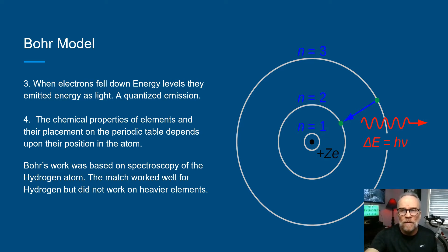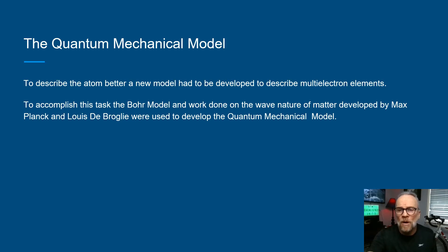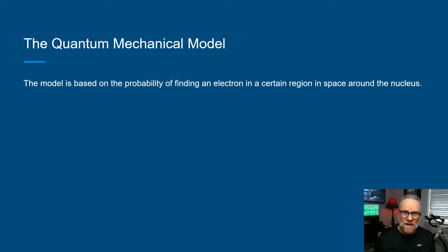The development of that better model came from other scientists. The wave nature work developed by Planck and de Broglie was used to develop this quantum mechanical model — scientists building on the work of other scientists. The model is based on the probability of finding an electron in certain regions in space around the nucleus, and we'll discuss why this probability concept is so important.